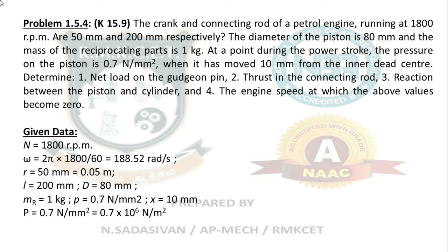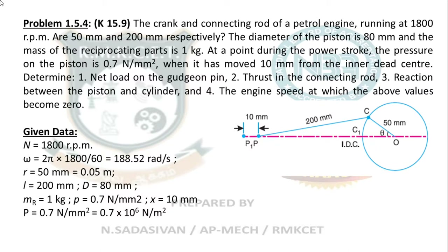Theta is not directly given; you have to find it from the displacement value x equals 10 mm. From the derivation of piston kinematics, we derived a displacement expression, then differentiated to get velocity. That displacement expression is what we use here to find theta. If you don't know the derivation, you at least need to remember the displacement expression.